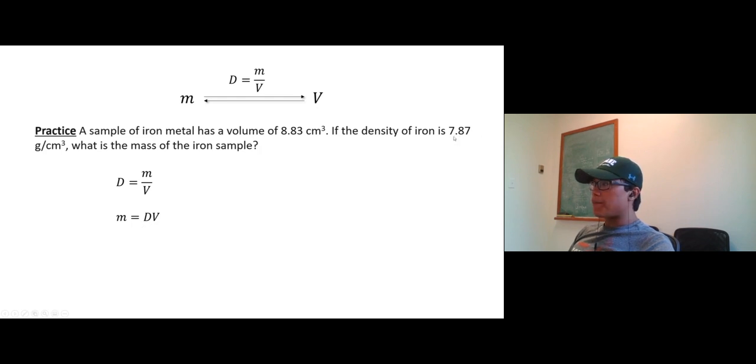Density is 7.87 grams per centimeter cubed, volume is 8.83 centimeters cubed. Watch the units - if they have different units, you have to convert the unit first. In this case, not the case. Centimeters cubed cancel out. 7.87 times 8.83 equals 69.5 grams. Three significant figures.